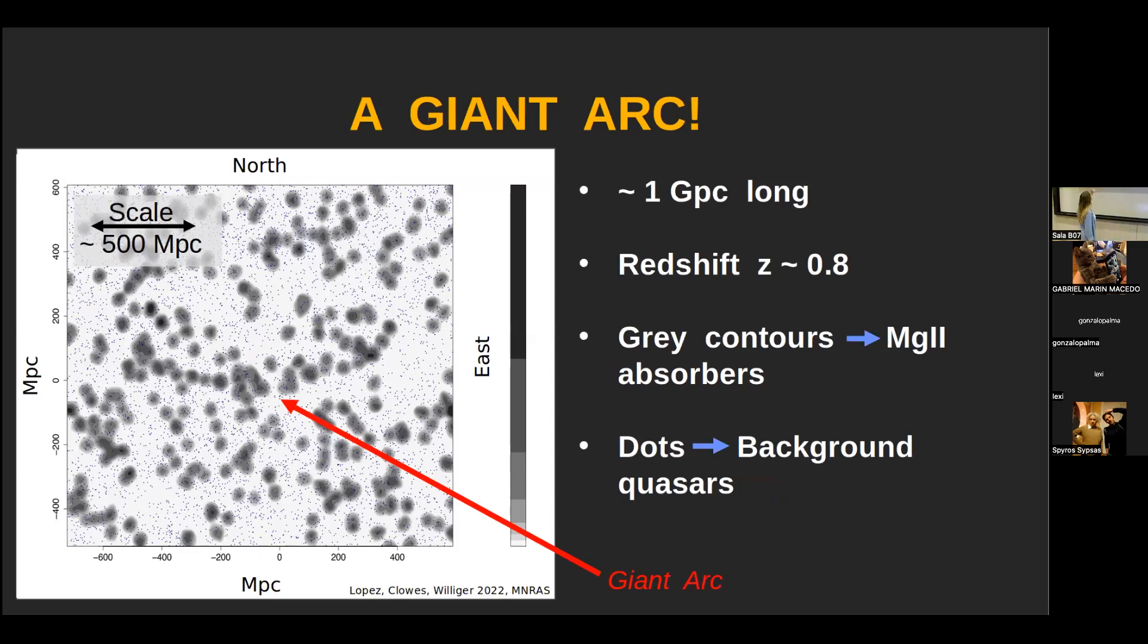This here is the giant arc. So I'll explain the figure. The gray splodges are the magnesium-two absorbers, smoothed out and flat-fielded. They're flat-fielded against the dots in the background, which represent the quasars. We flat-fielded the contours of the magnesium-two absorbers to give an idea of density or a truer density, because if you had a region of loads of quasars and then loads of magnesium-two absorbers, well, you'd expect this because there's loads of quasars to see the magnesium-two. This is a giant arc that extends approximately one gigaparsec scale to the present epoch. And it's at a redshift of 0.8, which means we're seeing this when the universe was only half of its present age.